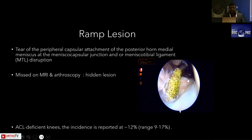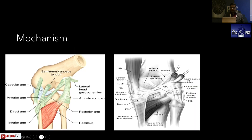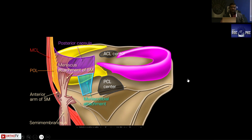It is often missed on MRI, which is why it is called a hidden lesion. In roughly 10 ACL cases, at least one or two will have a ramp lesion. To understand what is causing it, you need to understand that semimembranosis has various attachments: the direct arm, the anterior arm, and the capsular arm. The anterior arm attaches to the superficial MCL, and the capsular arm is directly attached to the meniscus capsular junction when viewed from the back of the knee.